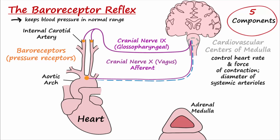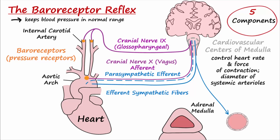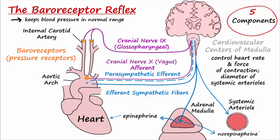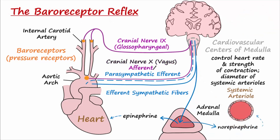The fourth components are efferent pathways, which travel to the effectors. Parasympathetic fibers extend from the cardiovascular centers of the medulla to the heart via the vagus nerve. Sympathetic fibers travel to the heart, to the vessels, and to the adrenal medulla. The adrenal medulla will release epinephrine and norepinephrine into the blood to increase cardiac output and vasoconstriction. The fifth components are effectors, and include the heart, which can respond by increasing or decreasing cardiac output.